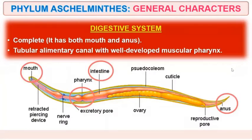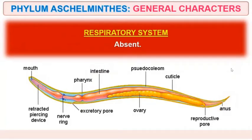The digestive system is complete — it has both a mouth and anus. A tubular alimentary canal is present with a well-developed muscular pharynx. In the diagram you can see the mouth and anus, intestine, pseudocoelom, ovaries, nerve ring, and pharynx are all present.